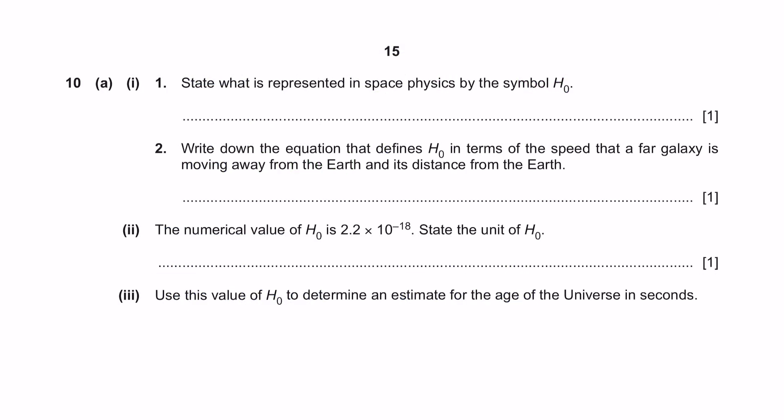Question 10, Part 1. State what is represented in space physics by the symbol H0. H0 is the Hubble constant. This is a pretty simple question. I hope you are familiar with your new chapter of space physics. If you're not, you can watch a video that I have uploaded on this topic. Part 2, write down the equation that defines H0 in the terms of speed that a far galaxy is moving away from the earth and its distance from the earth. The equation is Hubble constant equals speed over distance.